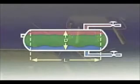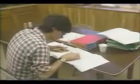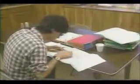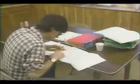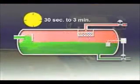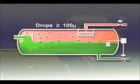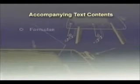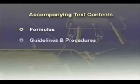Separators must be sized properly in order to avoid such problems. Design procedures require a thorough understanding of the separator operating principles and their relation to such variables as settling of the oil droplets, retention time, and droplet size. The accompanying text contains the necessary formulas for designing a three-phase separator, along with guidelines and step-by-step design procedures.